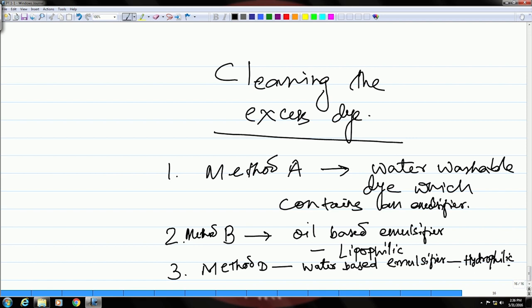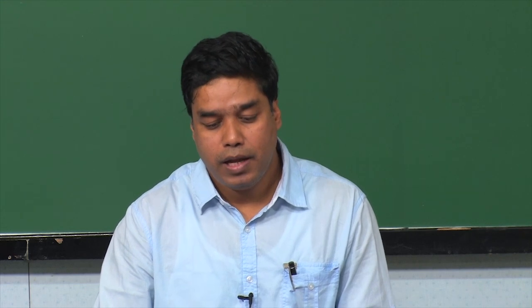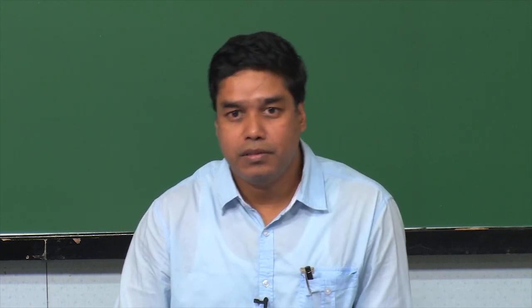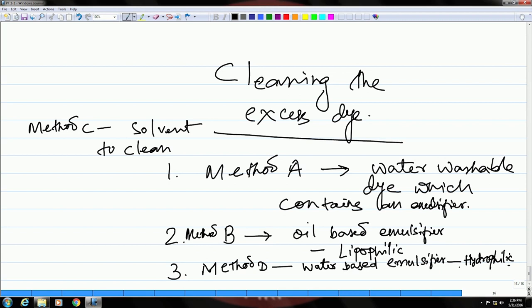Finally, there is Method C, in which you use a solvent to clean the excess dye. In this case, you simply take the solvent on a piece of cloth or cotton and then clean the surface. These are the different methods by which you can clean the excess dye and keep the surface ready for the next step.